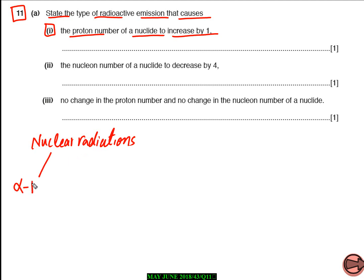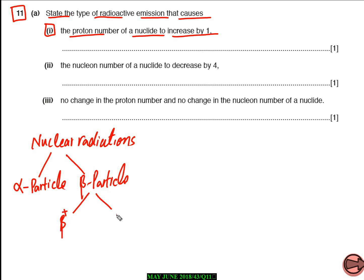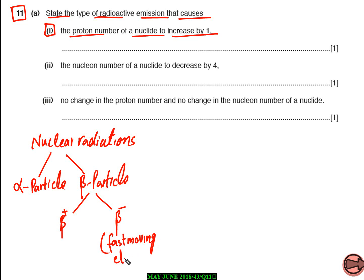The types of nuclear radiations: the first one is alpha particle or alpha decay. The second one is beta particles. There are actually two types of beta particles — beta plus and beta minus. Beta minus is simply a fast moving electron.